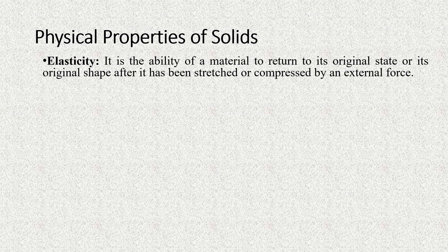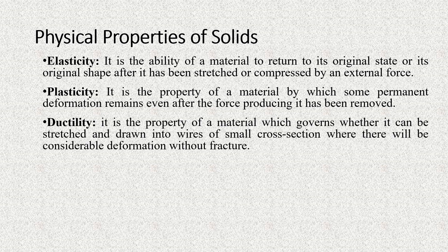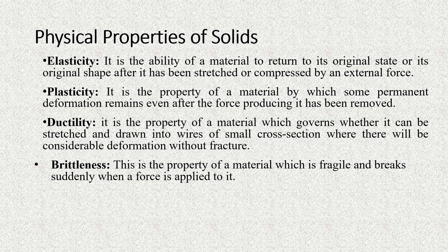Physical Properties of Solids: Elasticity is the ability of a material to return to its original shape after it has been stretched or compressed by an external force. Plasticity is the property of a material by which some permanent deformation remains even after the force producing it has been removed. Ductility is the property that governs whether a material can be stretched and drawn into wires of small cross-section with considerable deformation without fracture. Brittleness is the property of a material which is fragile and breaks suddenly when a force is applied to it.